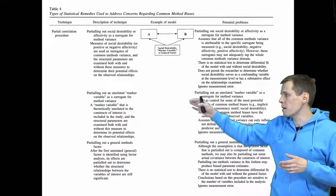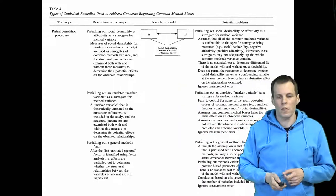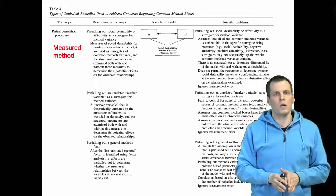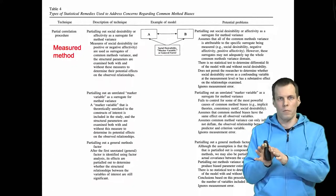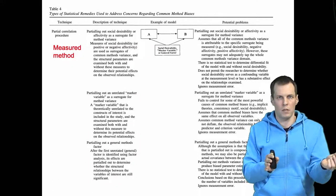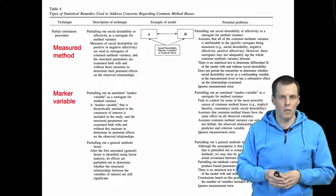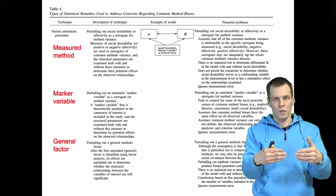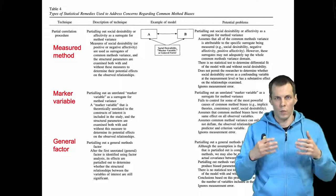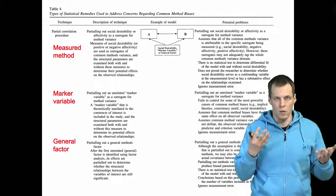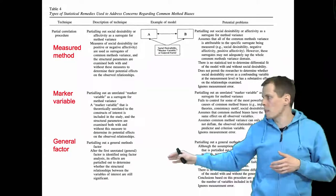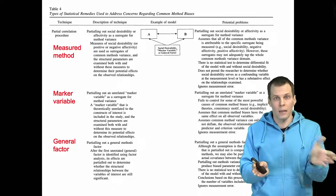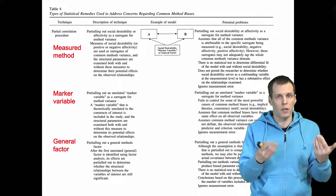These partial correlation methods come from different variants: we can calculate the partial correlation based on a measured method source — for example, measuring social desirability and checking how much it correlates with the study measures — or we can use marker variable techniques as explained already. Then there is the general factor technique, which estimates a single factor first, parcels its effects from the data, and estimates the model using residuals. This is basically a combination of the Harman single factor test — which is not useful — and the partial correlation technique — which is also questionable — so it combines two questionable techniques.